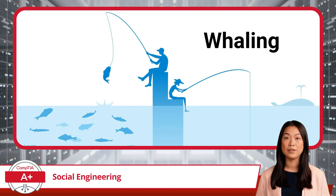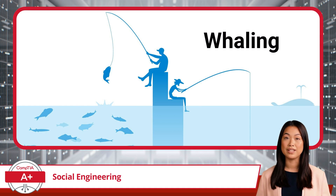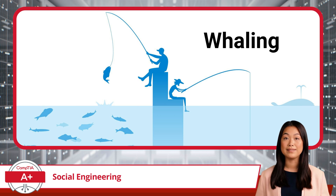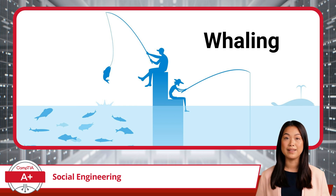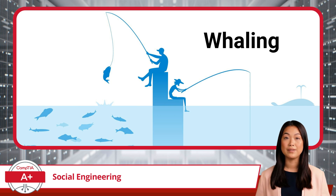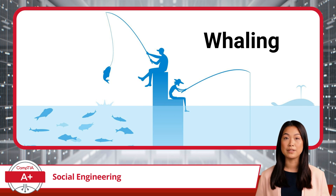After vishing, we have one more phishing variant to discuss, and that is whaling. Whaling is a more targeted and high-stakes version of phishing. Instead of going after regular employees or the general public, attackers aim for the big phish, or whales. These targets are usually executives or high-profile individuals within an organization. Scammers craft highly personalized emails or messages — for example, a CEO might receive an urgent request from the CFO asking them to approve a large wire transfer. The best defense against whaling? Encourage higher-ups to verify any sensitive requests through a second method, like a phone call or in-person confirmation. It's all about making sure even the whales are aware of the bait.